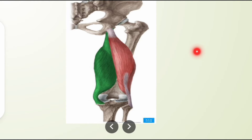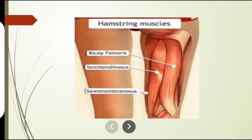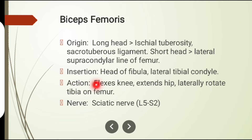The third muscle involved in knee flexion is biceps femoris. It consists of two heads: long head and short head. The long head originates from the ischial tuberosity and sacrotuberous ligament. The short head originates from the lateral supracondylar line of the femur. Its insertion is on the head of the fibula and lateral tibial condyle. All three muscles — biceps femoris, semitendinosus, and semimembranosus — are also called the hamstrings. The action of biceps femoris is knee flexion, hip extension, and lateral rotation of the tibia. Its nerve supply is from the sciatic nerve.